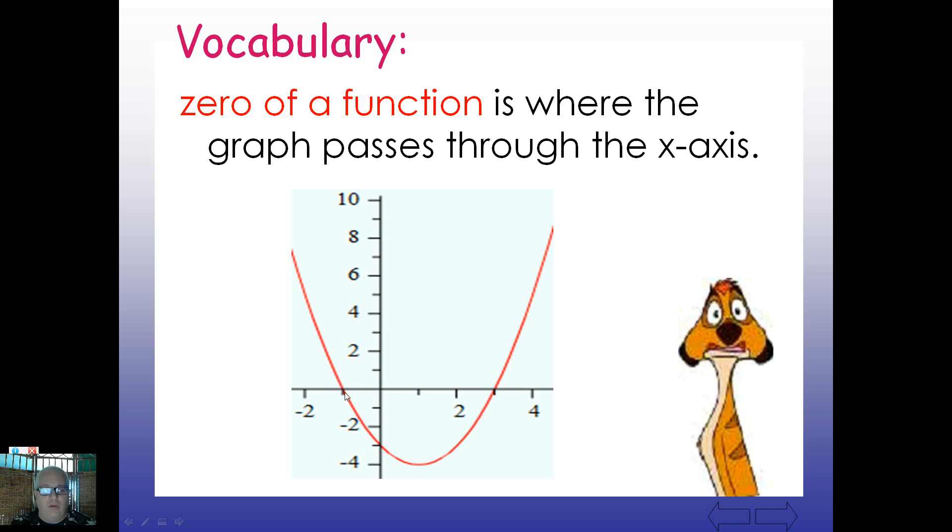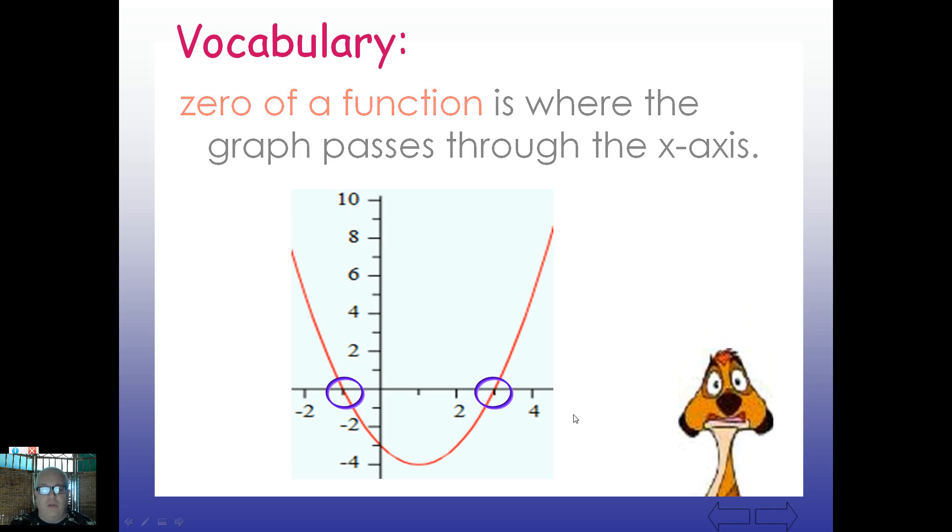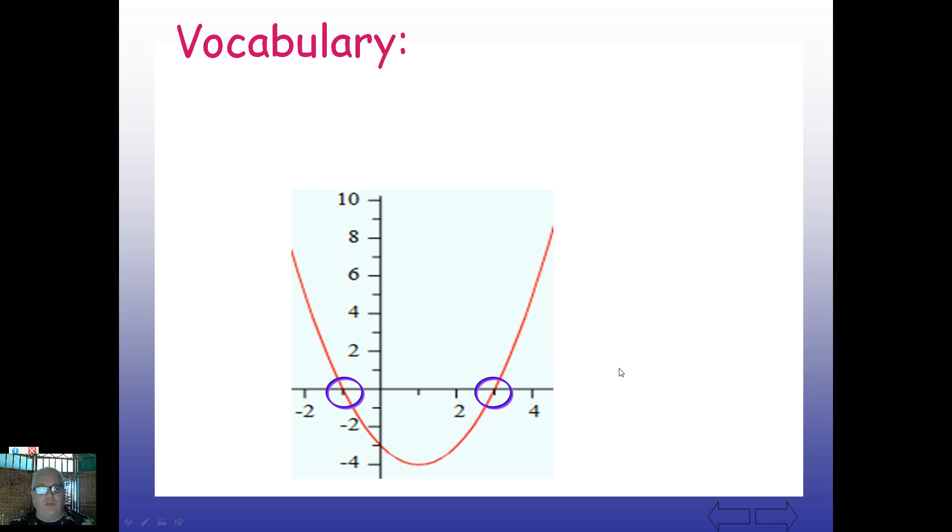So when we're talking about a zero of a function, it's simply where a graph, or in this case, a parabolic function passes through the x-axis. In this case, what would be our value where it passes through? Doesn't it pass through here at negative one? And it also passes through at positive three. So right here are our zeros, and we simply say that these are the zeros of this function.